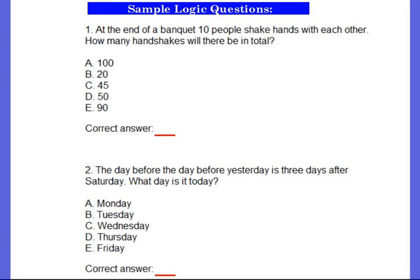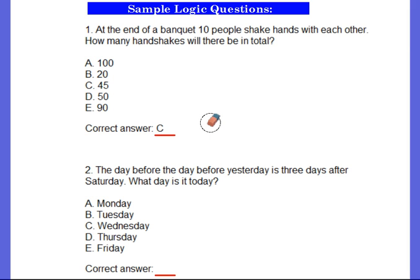For logic questions, number one: at the end of a banquet, 10 people shake hands with each other. How many handshakes will there be in total? If you'd like more time, go ahead and pause the video. The answer is C — 45. In my face-to-face class, my students at first didn't think that was the correct answer, so they really wanted to figure it out. They worked at it, and the answer really is 45.